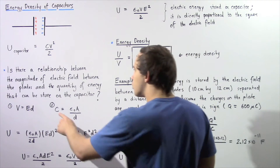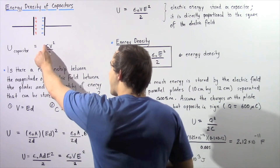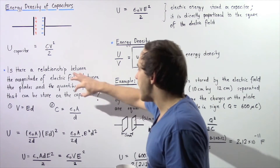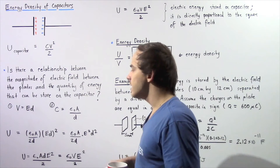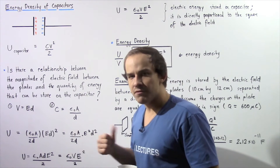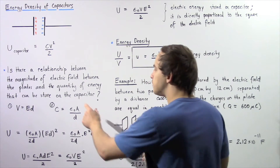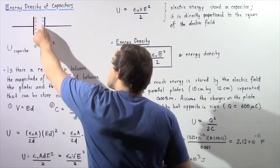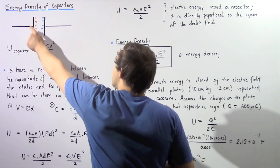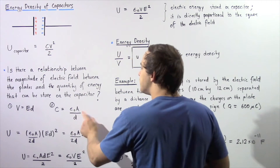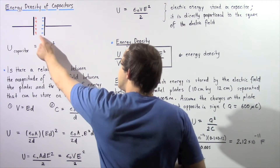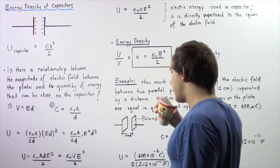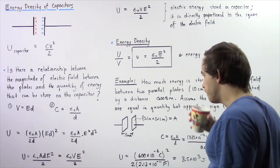Let's also recall that the capacitance is equal to the product of epsilon naught, the permittivity of free space, multiplied by the area — the surface area of either one of these plates — divided by the distance d between our two plates.